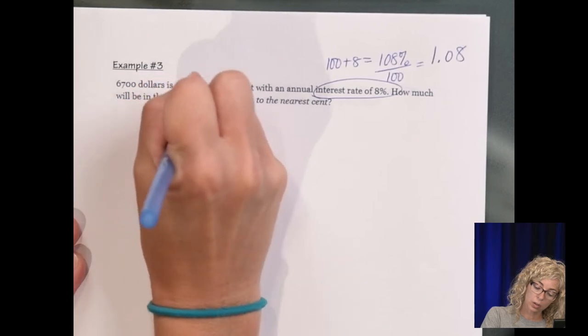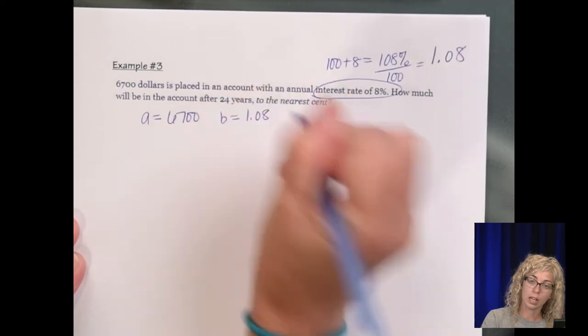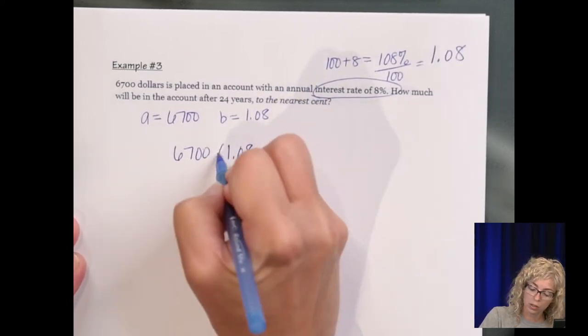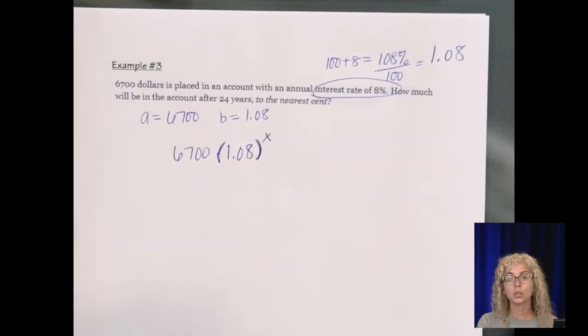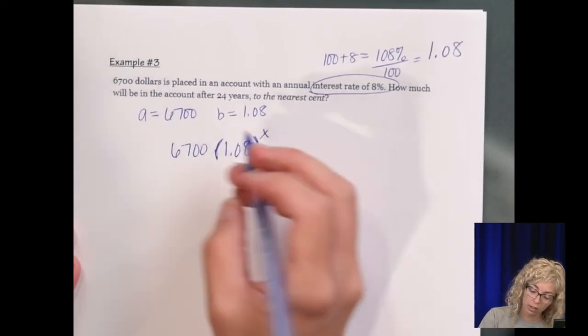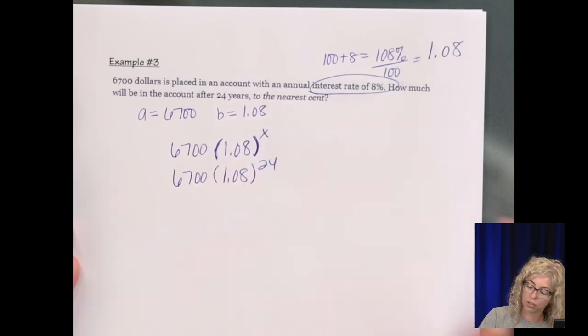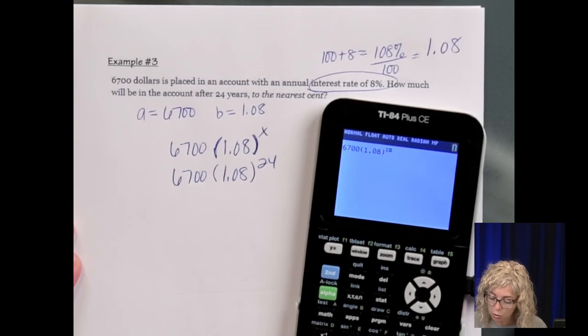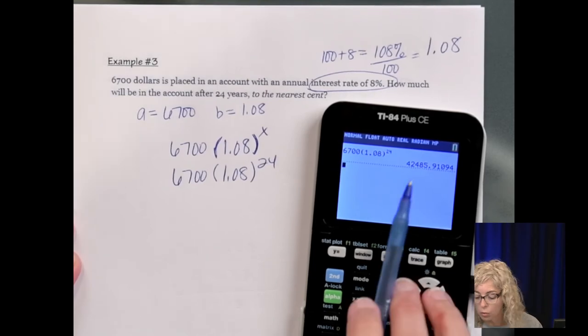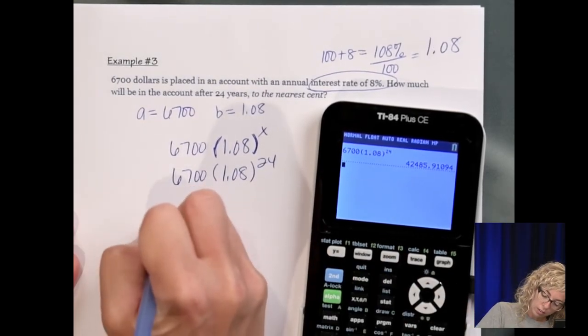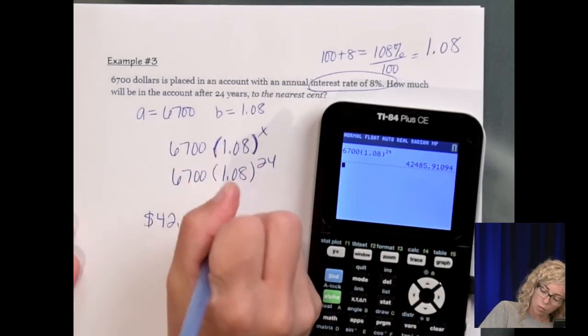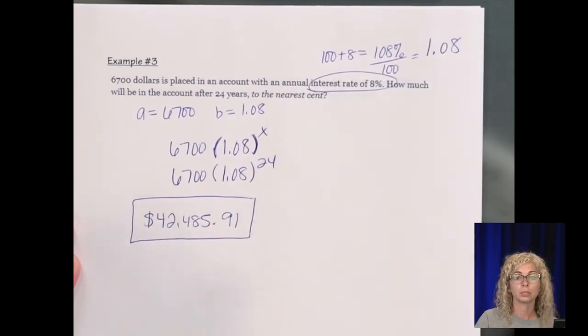Our A, that's how much we're starting with, 6,700. Our B is going to be 1.08. So our exponential expression would be 6,700 times 1.08, I'm going to use the parentheses because of the decimal, to the X, where the X represents the amount of time in this case. So for 24, we actually want to evaluate or plug in 24 for the X. Now you just go to your calculator. So 6,700, parentheses 1.08 to the 24th. And we need to round to the nearest cent. So we're going to have 42,485 and how many cents? Now that's two decimal places. So to the right of the one is a zero, so that's going to keep it 91 cents.